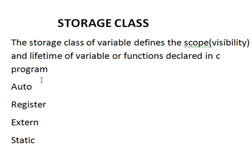We will discuss all of them through a table, mainly about auto. Auto is a simple variable that we have declared until now. Register is also a type of variable. We will also cover external and static, and see through a table how each one works.